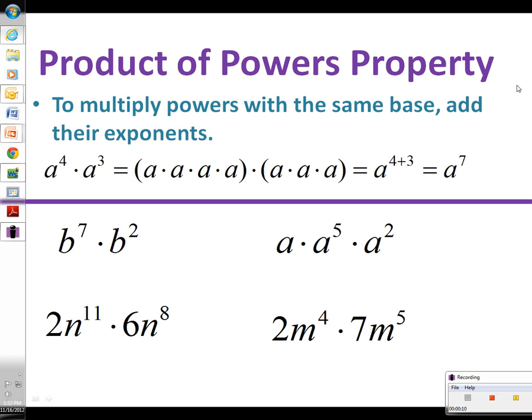So if we look at this example here, we have a to the fourth power times a to the third power. a to the fourth power can be represented by multiplying a times itself four times. a to the third power is a times itself three times. When we put all those together,